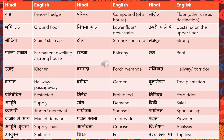'Mazboot' means strong. 'Pakka makaan' means permanent dwelling or a strong house, while 'kaccha makaan' is the opposite. 'Chhaja' is a balcony. 'Chhat' can be translated as roof or terrace depending on context — if someone says 'chhat pe baitha tha,' you would say 'I was sitting on the terrace.' 'Rasoi' means kitchen, 'baramda' means porch or veranda.